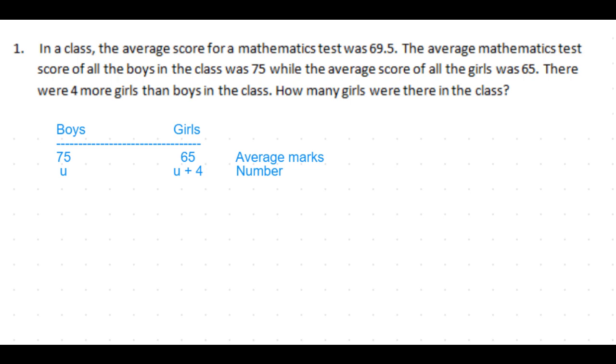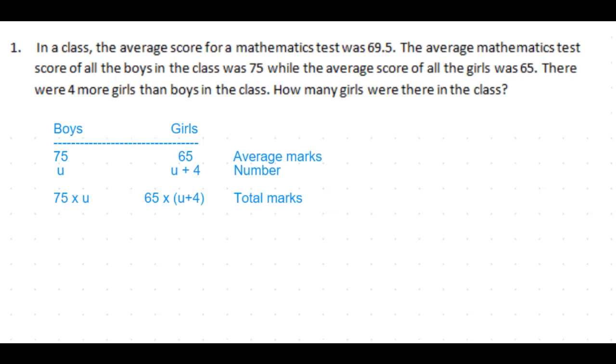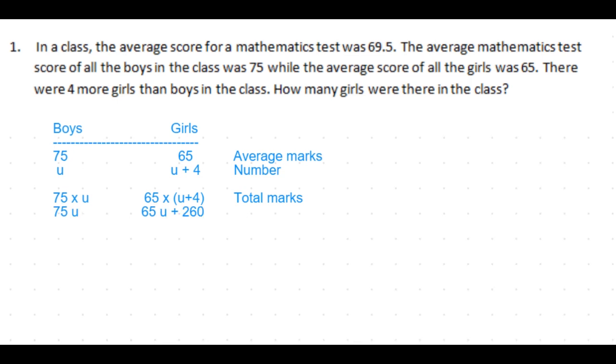There were four more girls in the class, so the number of girls becomes u plus 4. What happens to the total marks? Total marks is the average marks times the total number. So total marks for the boys is 75 times u which is 75u, and for the girls is 65 times u plus 4 which is 65u plus 260.